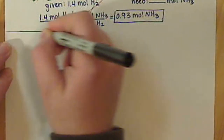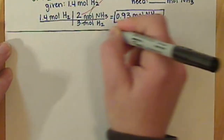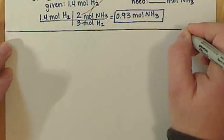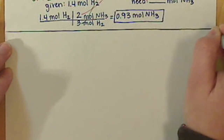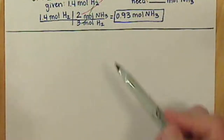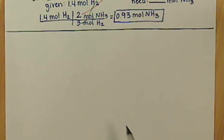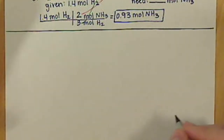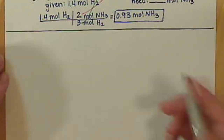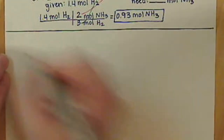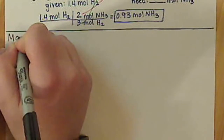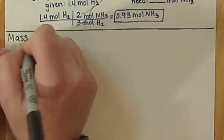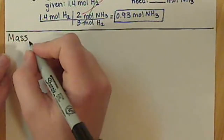Our next section in chapter 6 basically just expands on these mole-to-mole factors, our stoichiometry. We're going to combine our concept of molar mass with our concept of stoichiometry, so we're going to look now at mass calculations for our reactions.